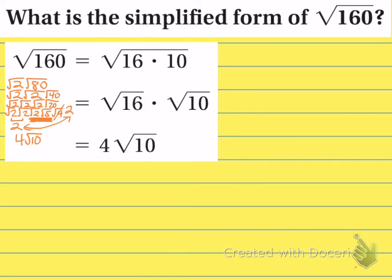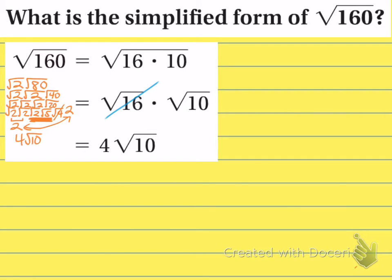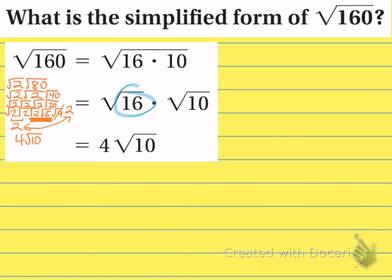That was a very complicated way of doing this. It would be much easier if you just made 160 into 16 times 10. 16 is the largest perfect square that divides 160, so you square root 16 and get 4. You get the exact same answer. Again, when you have the largest perfect square dividing the number, you get the answer in the quickest way possible.